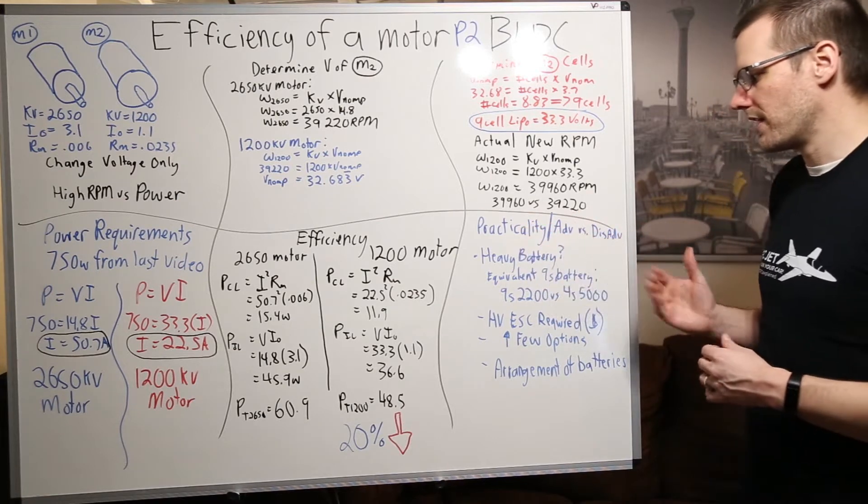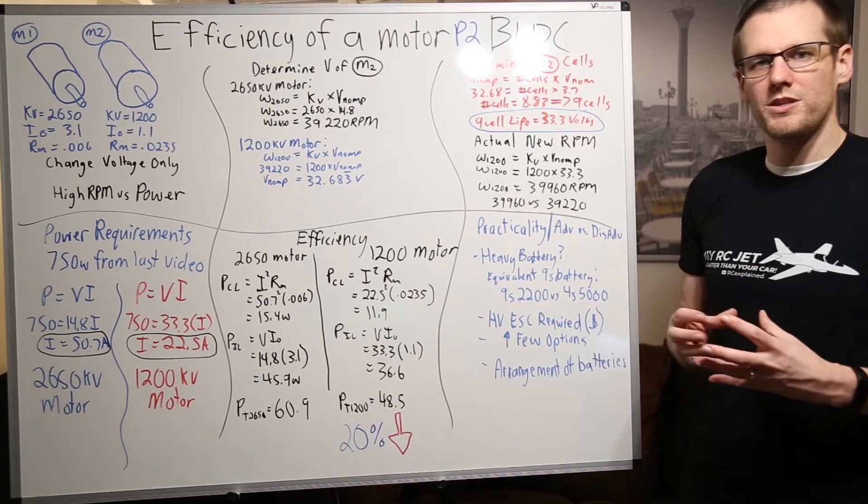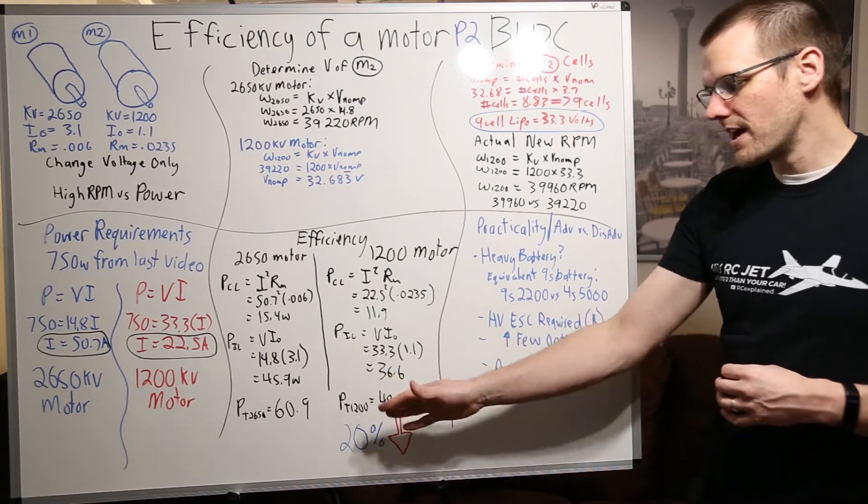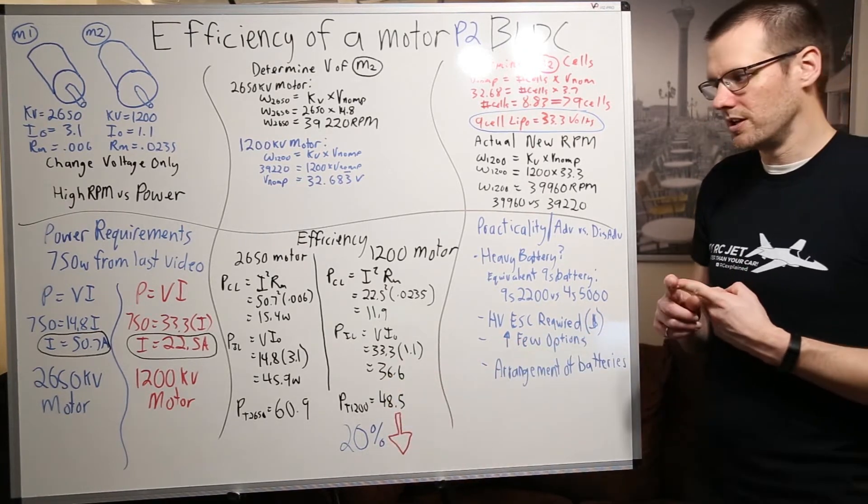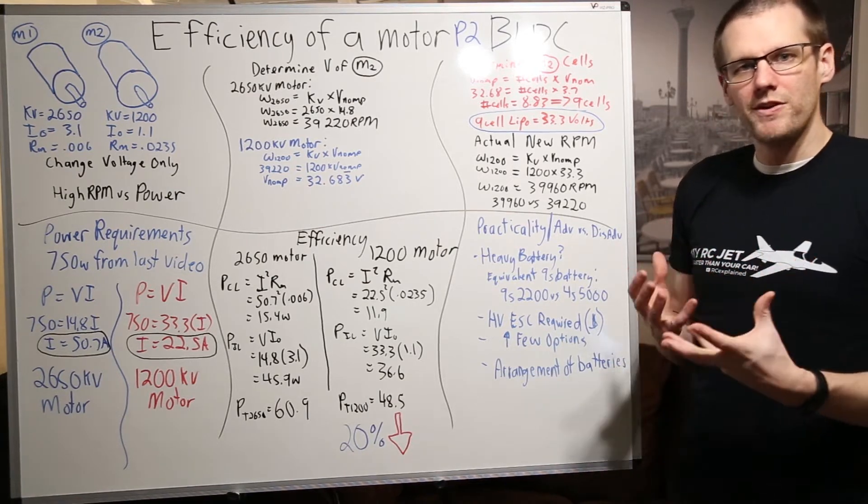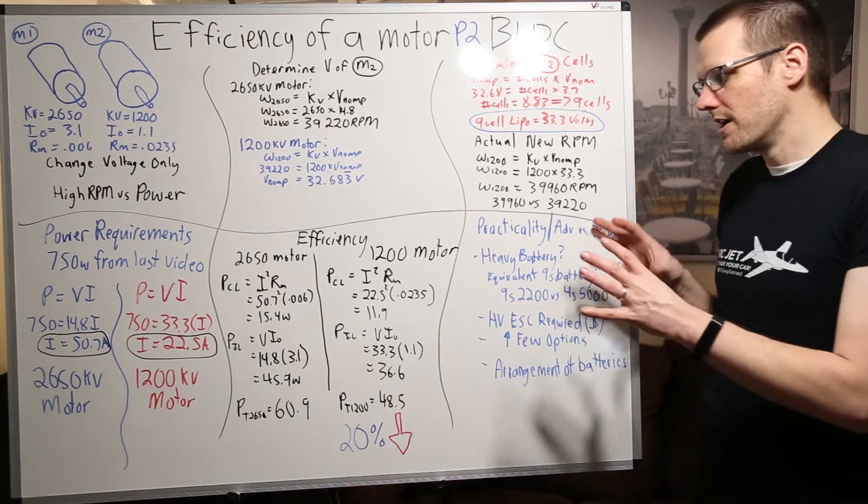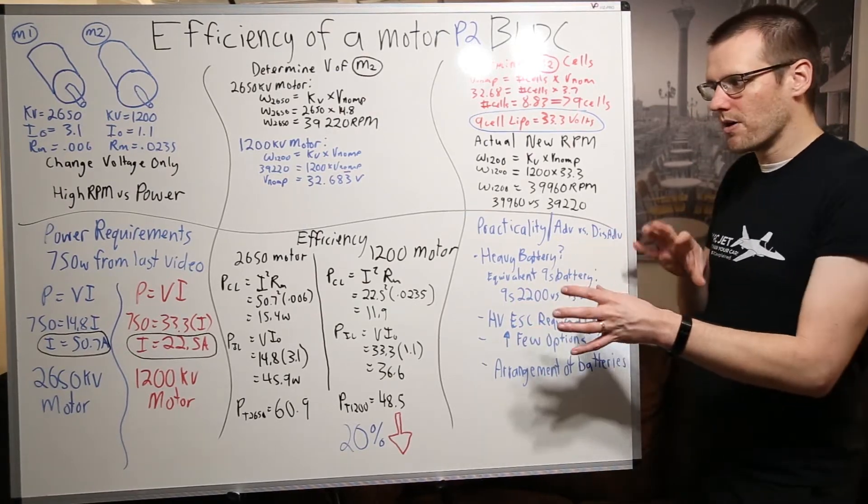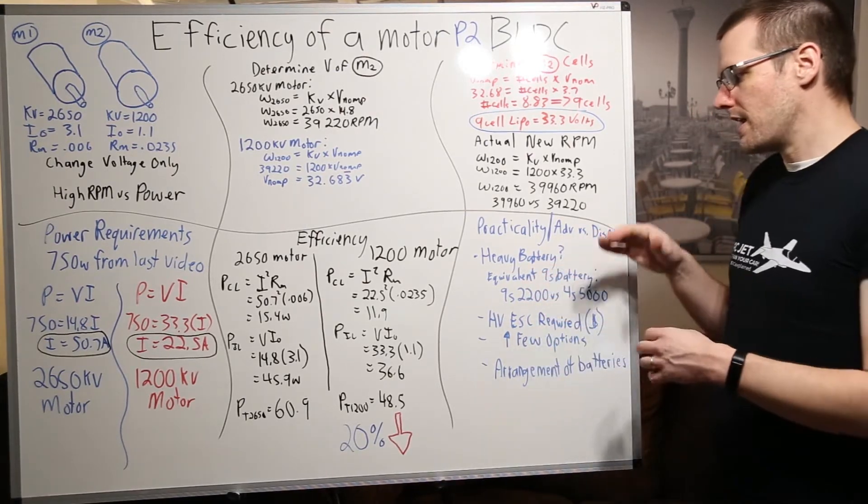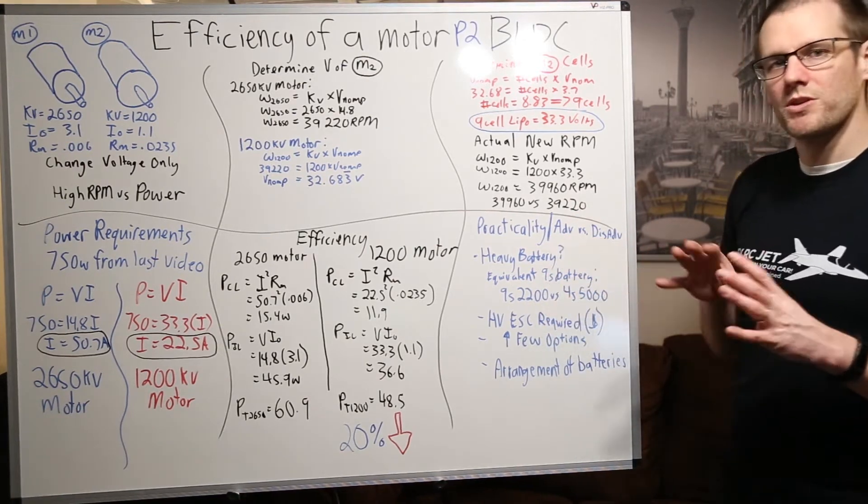So let's look at the practicality and advantages and disadvantages of this. Well certainly we know what the advantage is. We have that written here. 20 percent decrease in the amount of losses which means that we get better efficiency with this type of setup. You know again it's theoretical I know but that's what it's telling. That's what the simple model and the numbers are telling us. Now one of the things that we do have to consider is items like what happens with our battery pack.